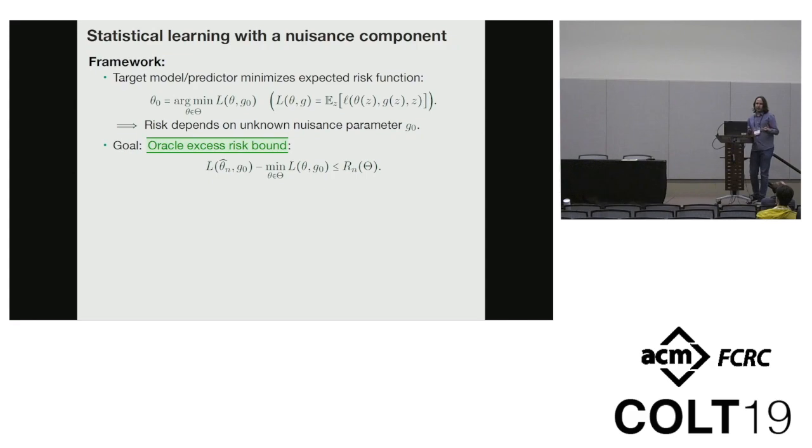Of course, one could always imagine trying to estimate G, just like we did in the last example. But we're going to be particular about how we define performance in this setting. Our goal is to get what's called an oracle excess risk bound. This will be an excess risk bound where the risk depends on the complexity of the class that the target belongs to, but not the complexity of the class that the nuisance belongs to. So we can get away with using a very big class of nuisance parameters without paying for it in the sample complexity.